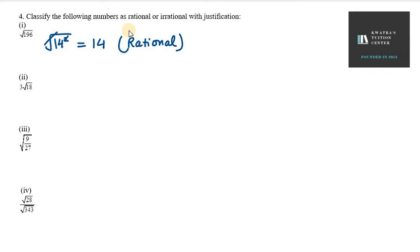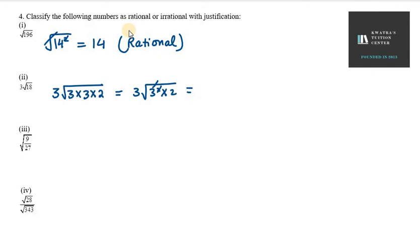The next one is 3√18. Let's simplify: we write 18 as 3 × 3 × 2, which is 3² × 2. So the square and root cancel, giving us 3 × 3√2, which is 9√2 — an irrational number.